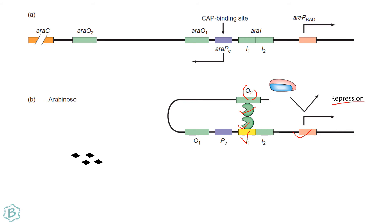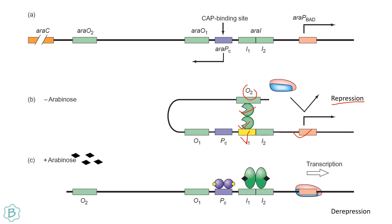When arabinose is present, it binds to the AraC protein, changing its conformation and leading to the formation of an AraC dimer that binds to the I1 and I2 regions. In addition, when glucose is low, the cyclic AMP-CAP complex binds to the CAP binding site and further stimulates transcription, causing derepression of the operon.